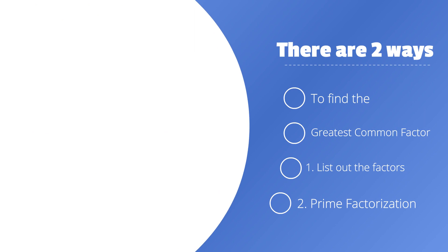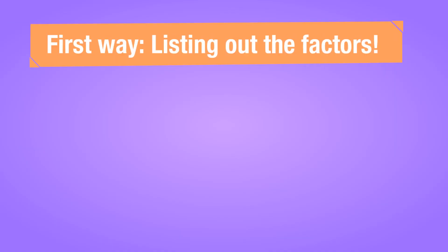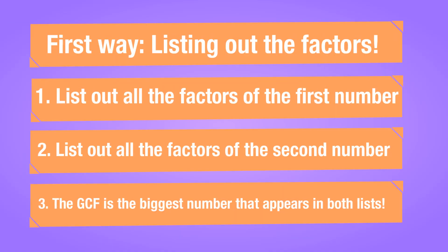There are two ways to find the greatest common factor. The first way is to list out the factors, and the second way is prime factorization. To use the listing method, we first list out the factors of the first number, then we list out the factors of the second number, and our GCF is the biggest number that appears in both of our lists.